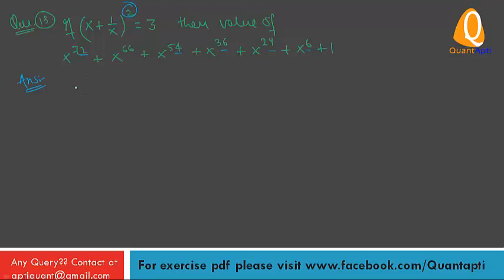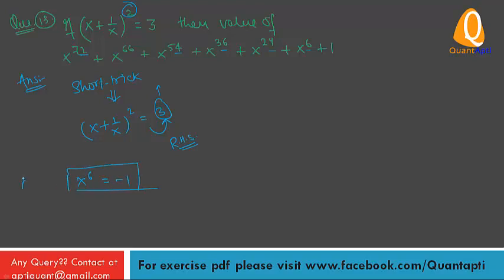What is the short trick? Whenever x plus 1 by x whole square is equal to 3, the right hand side value is divisible by 3. In that case, we consider x raised to power 6 is equal to minus 1 always. You have to remember this.